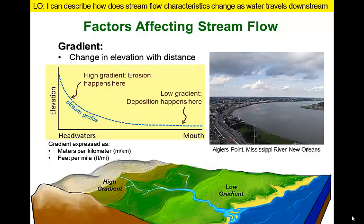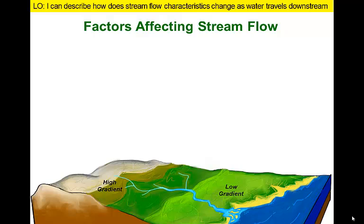Near its mouth, a stream flows over a nearly flat floodplain. These sections of the stream experience deposition and gentle stream gradients of less than a meter per kilometer, or just a few feet per mile. The characteristics of a stream vary traveling from its source to its mouth.